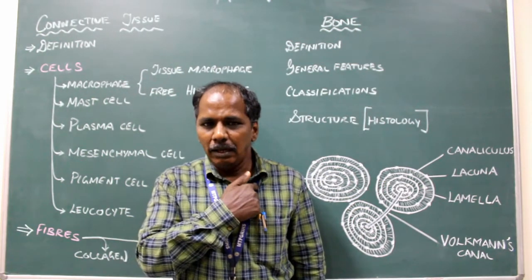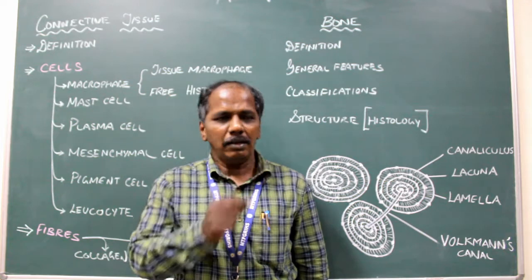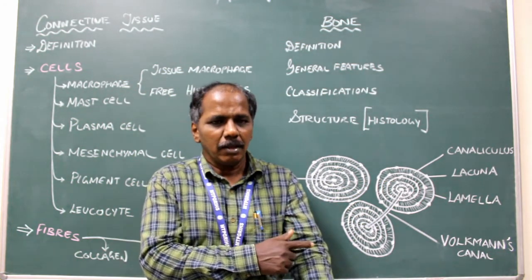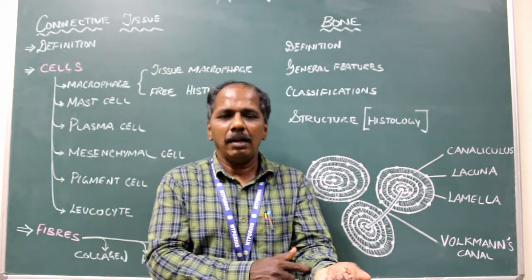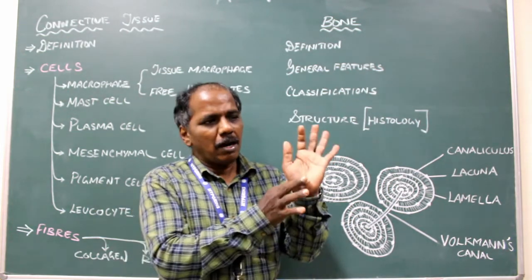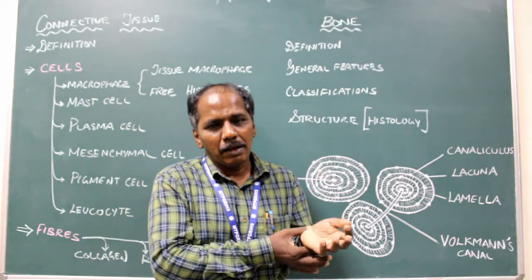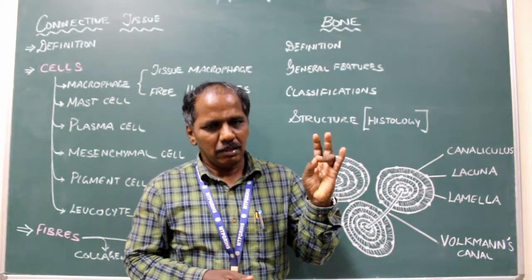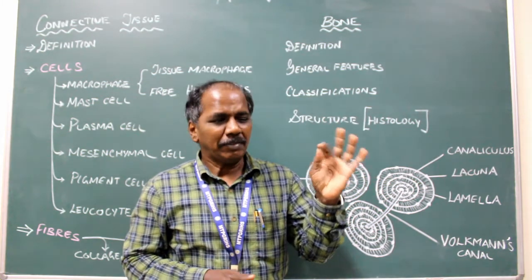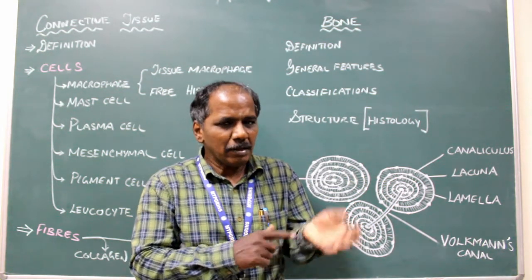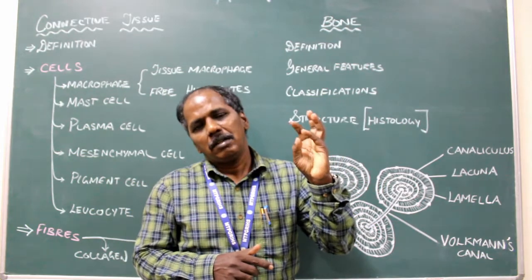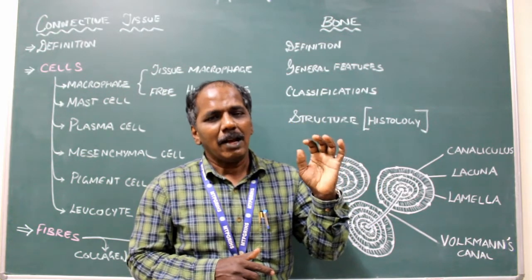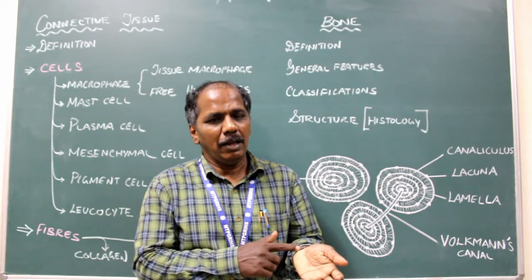Bones of the upper limb: number one, clavicle; number two, scapula; humerus — the bone of the arm; radius and ulna — bones of the forearm; and carpal bones. There are eight carpal bones. The superior row contains: scaphoid, lunate, triquetral, and pisiform. The distal row contains: trapezium, trapezoid, capitate, and hamate — so totally eight bones.